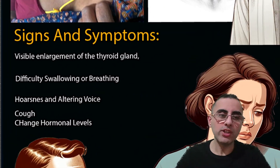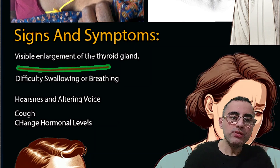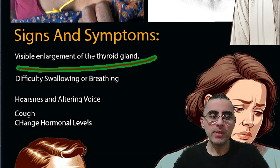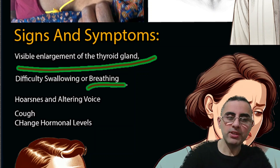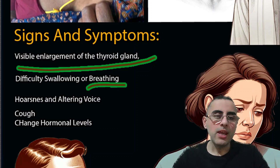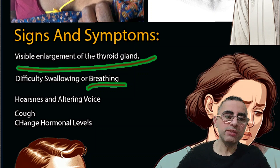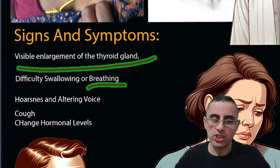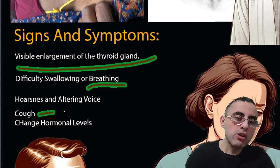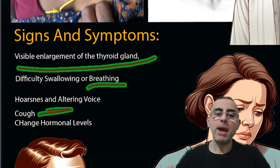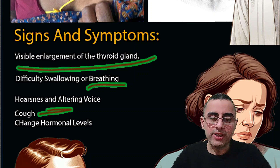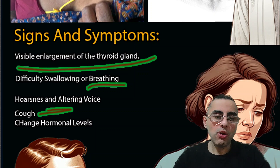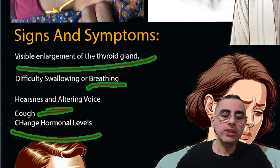The signs and symptoms of goiter: visible enlargement of the thyroid gland is the most common sign. Sometimes a person feels difficulty swallowing, difficulty breathing if the thyroid enlargement is severe, and hoarseness or altered voice is also possible because the enlarged thyroid gland can compress the nerves responsible for voice production. Cough is also common because it can compress the windpipe and cause chronic cough.